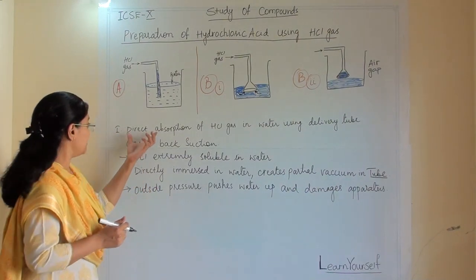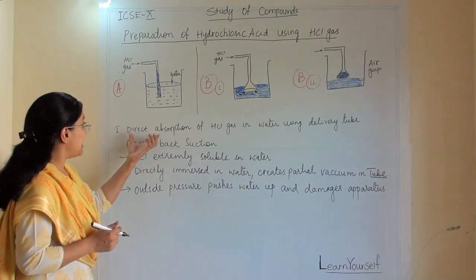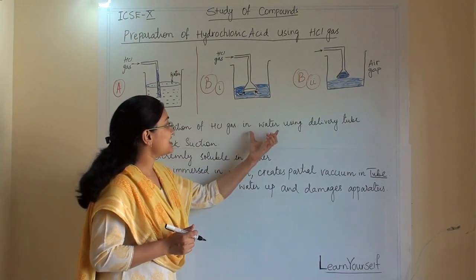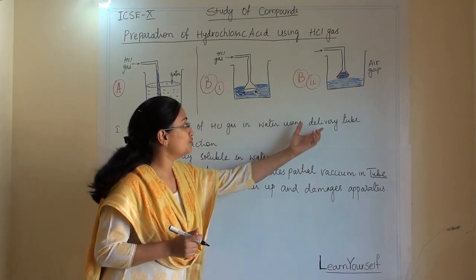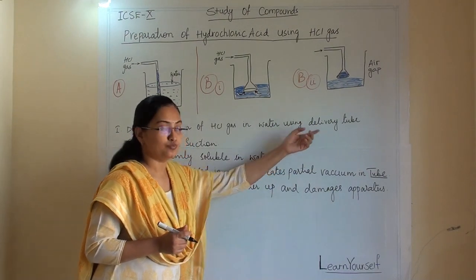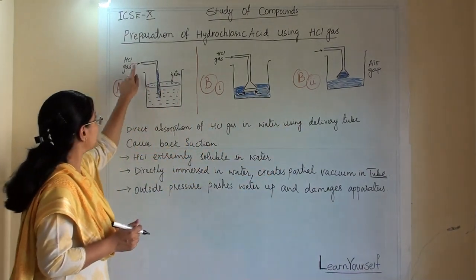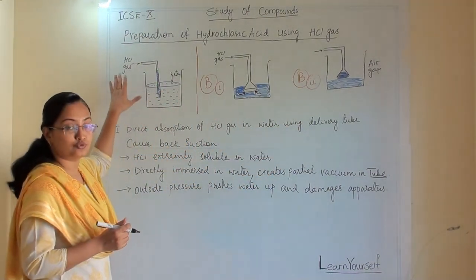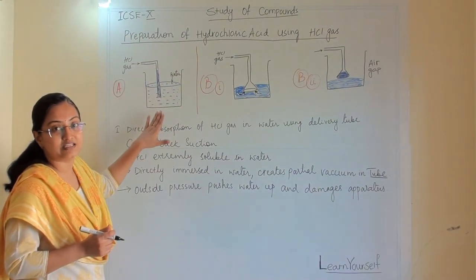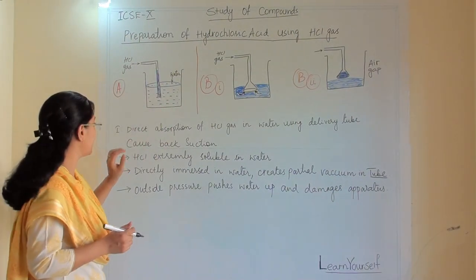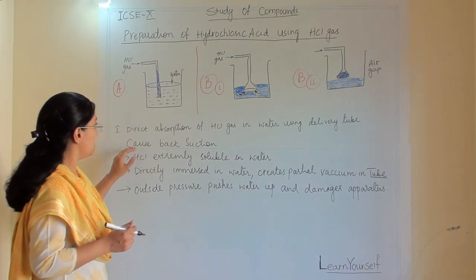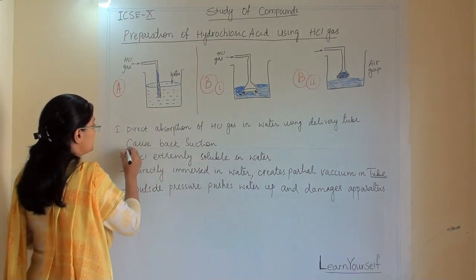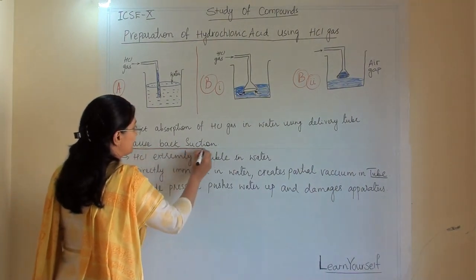The first thing: direct absorption of HCl gas in water using a delivery tube. This is a gas pipe — this is a delivery tube through which we are passing the HCl gas. It will cause back suction.